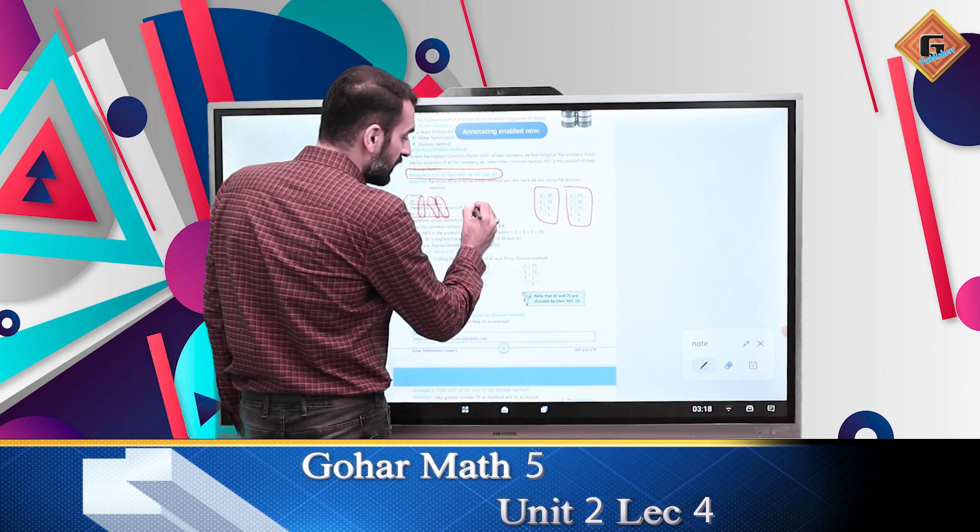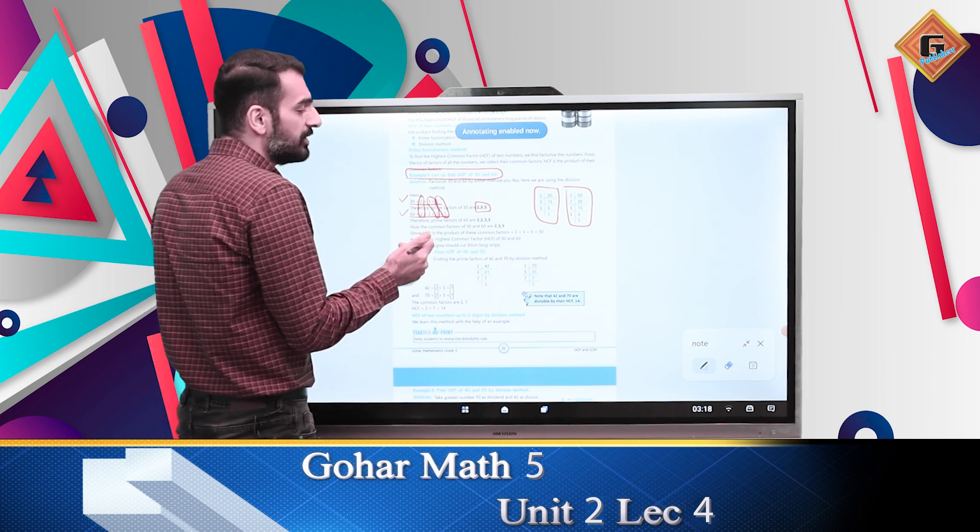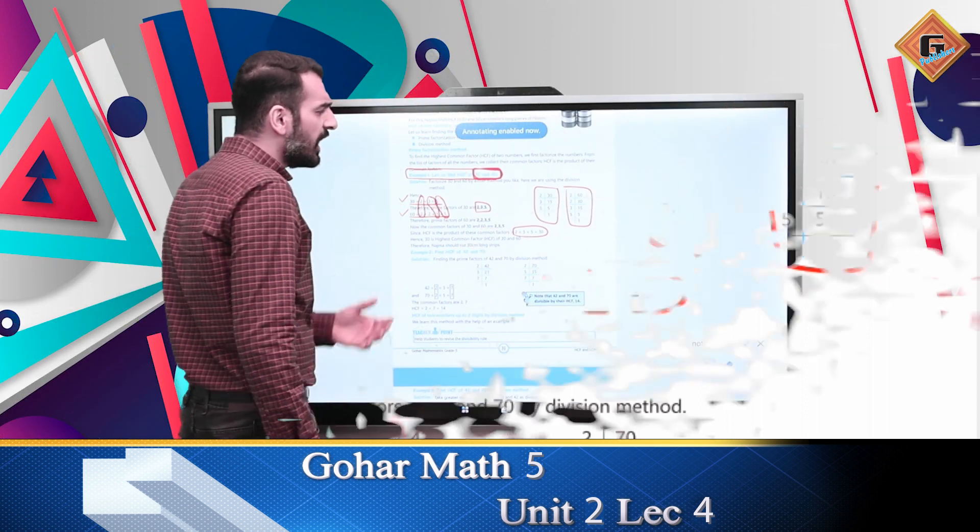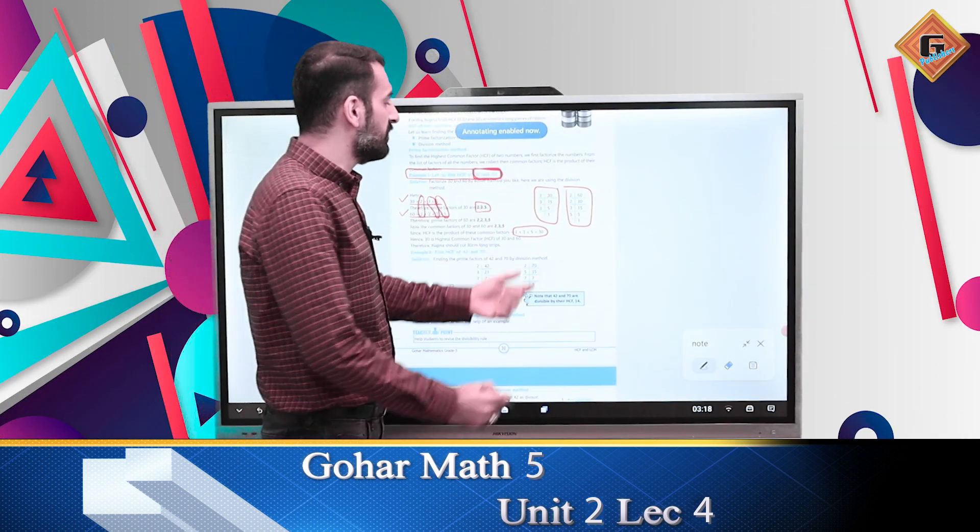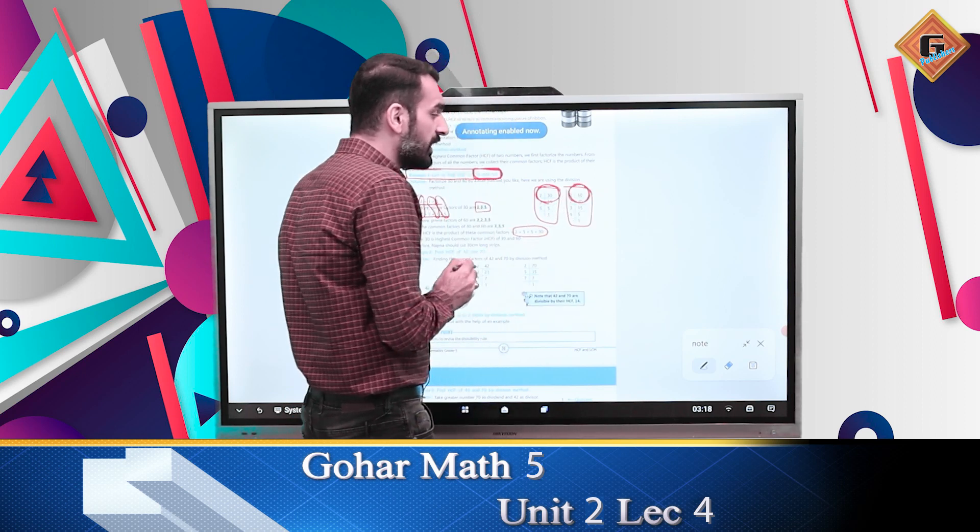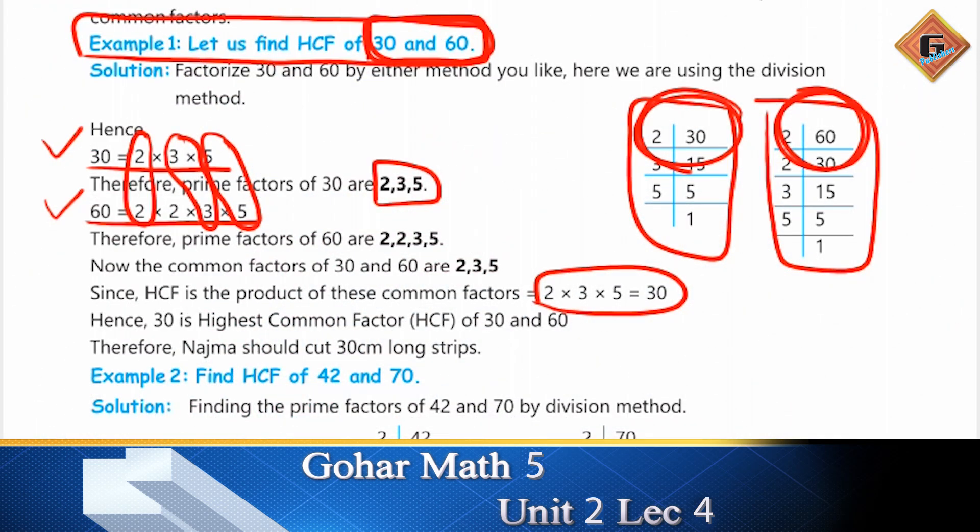So we have three common factors: 2, 3, and 5. If you multiply 2, 3, and 5, you get 30. This means that 30 is the highest common factor of 30 and 60. The highest common factor is the largest number that divides both numbers completely.